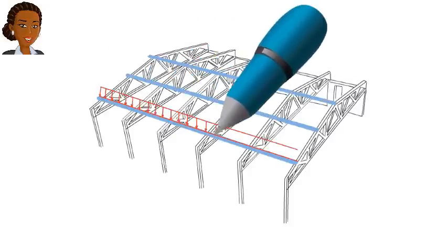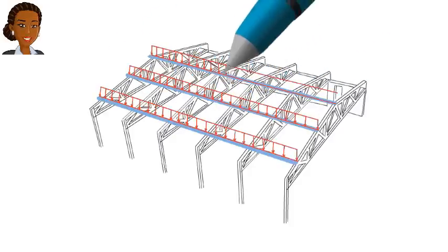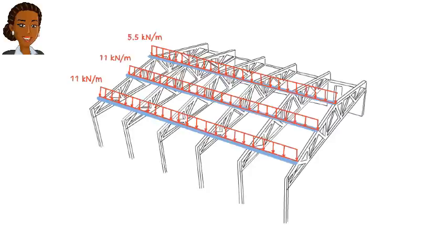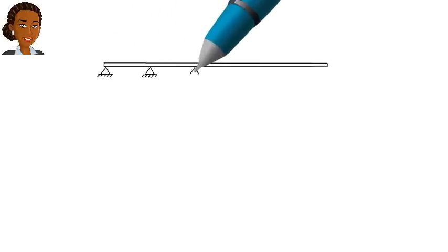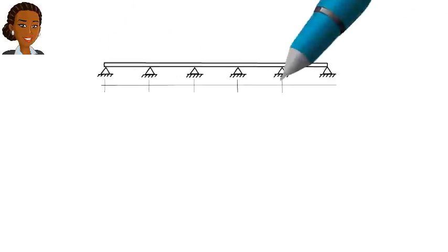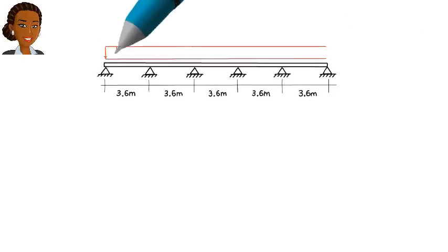Here are the beams resting on the trusses. Since each beam is supported by 6 trusses, we can view it as a continuous beam with 6 pin supports, like this. The supports are the points of contact between the beam and the trusses. These are the points through which the beam load transfers to the trusses.